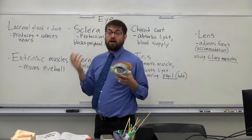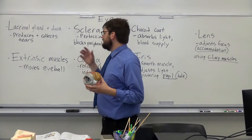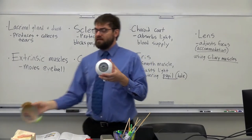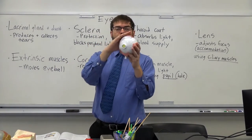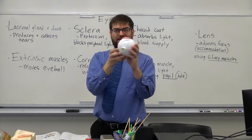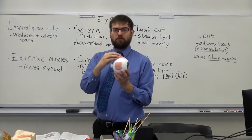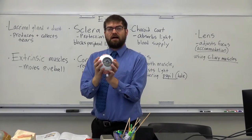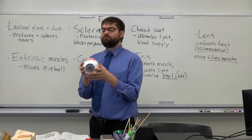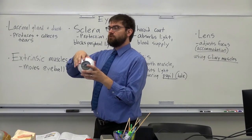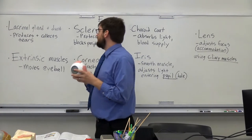That's why when you cry, your nose runs. Now if we take this part off, we can see that surrounding the eyeball we have these muscles — these are called the extrinsic muscles. These muscles pull on the outside of the eyeball to make the eye move up, down, left, right, and every which way, allowing you to look in all directions.